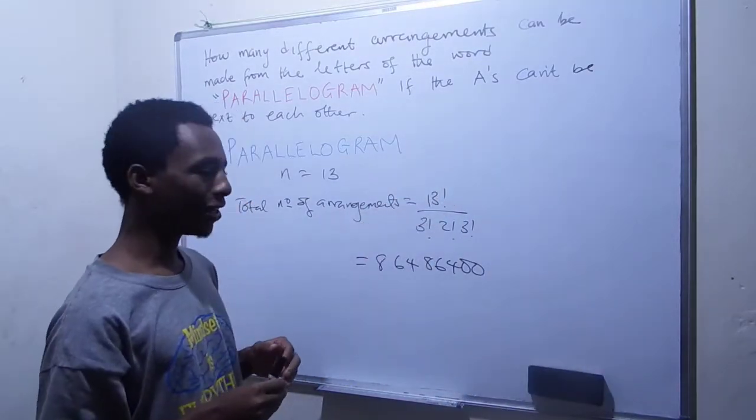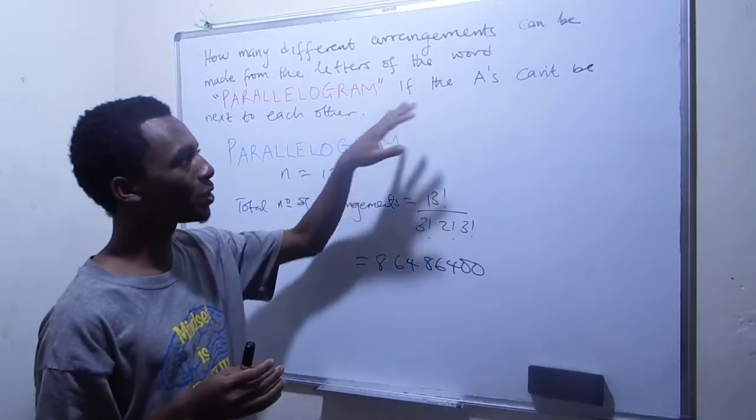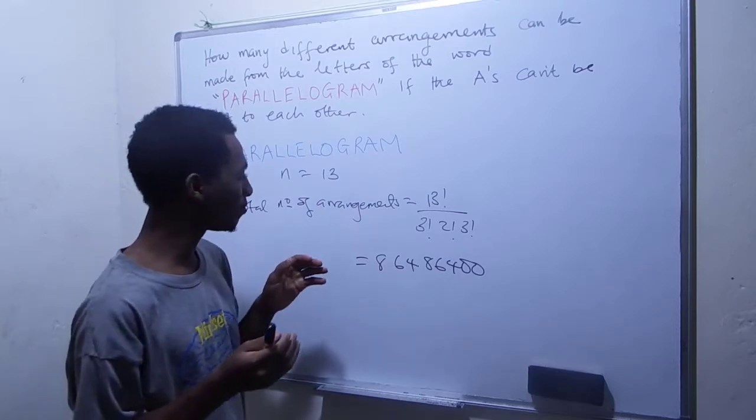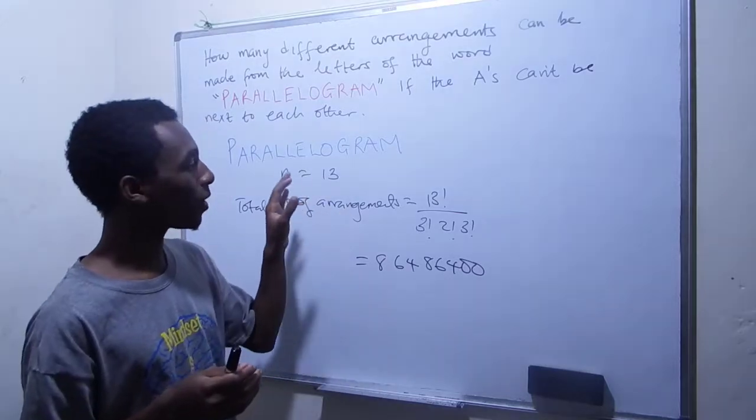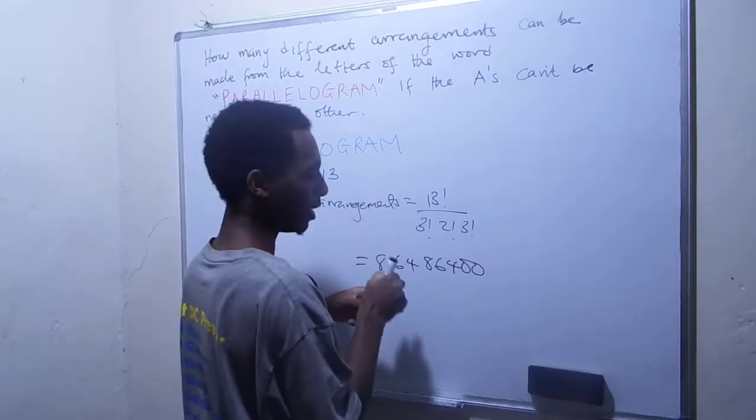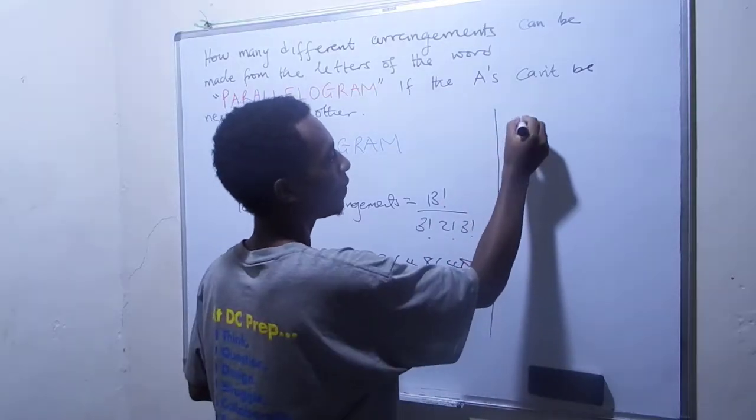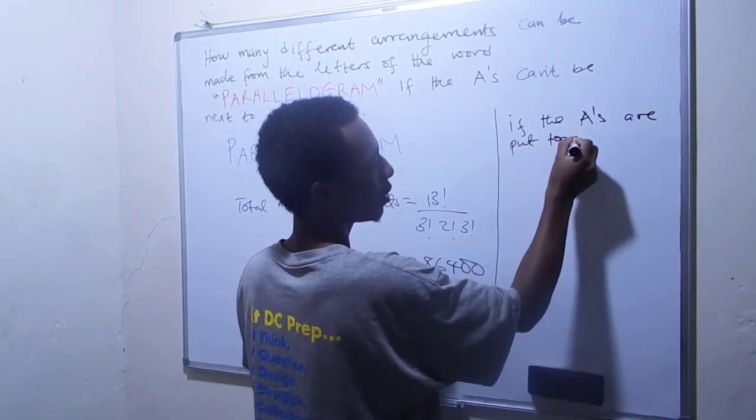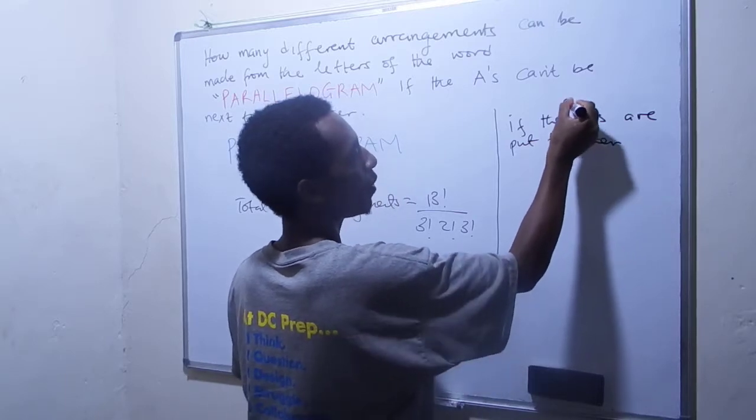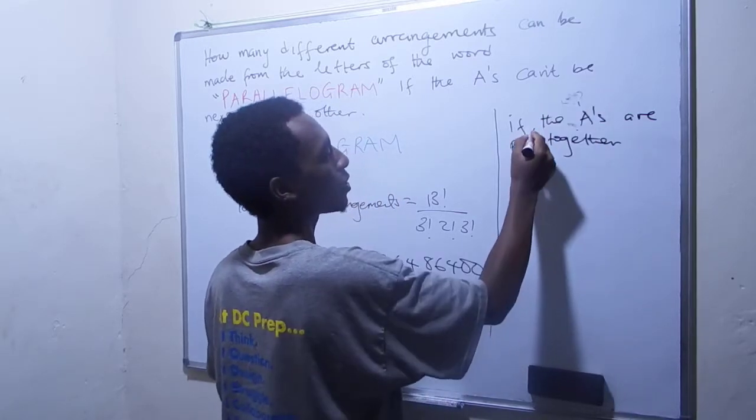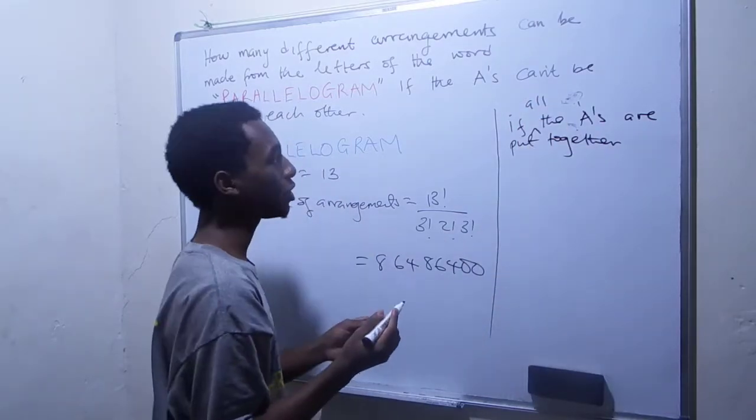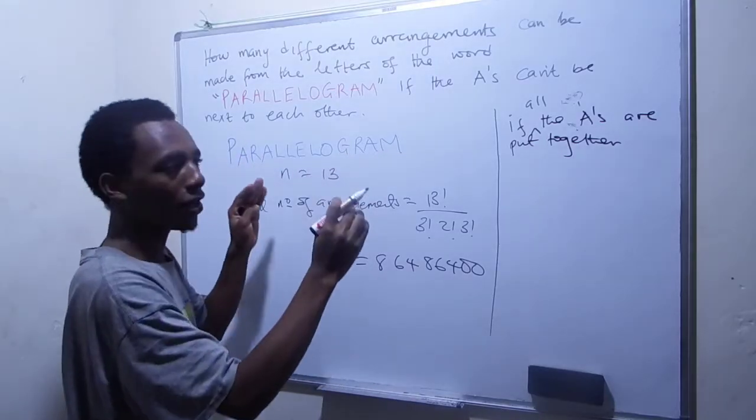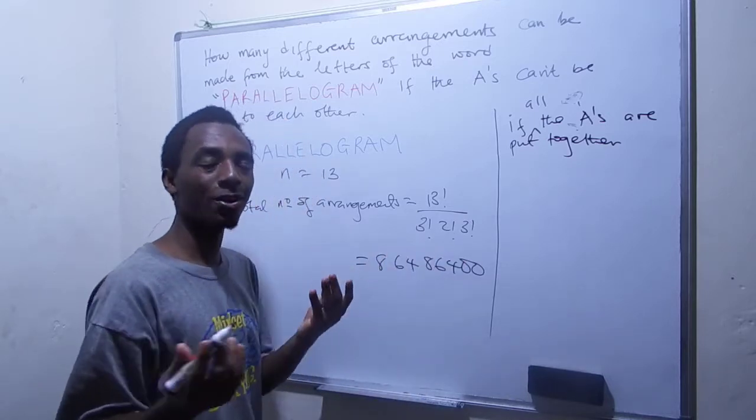If the A's can't be together and it's actually quite hard to apply these restrictions of the A's not being next to each other or not being together. So what I'm going to do here is to find the possible ways of arranging this thing if the A's are put together. So let's just go ahead and do that. So if the A's are put together, I mean, if all the A's, should I put that here? So if all the A's are put together, like next to each other, so we'll have this A here and another one here and also this one here.